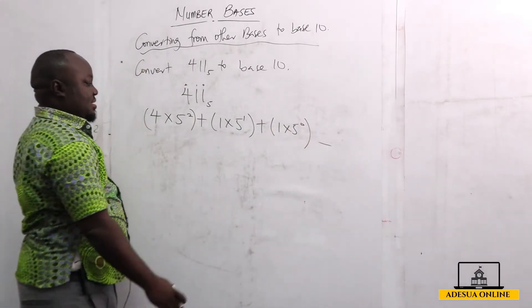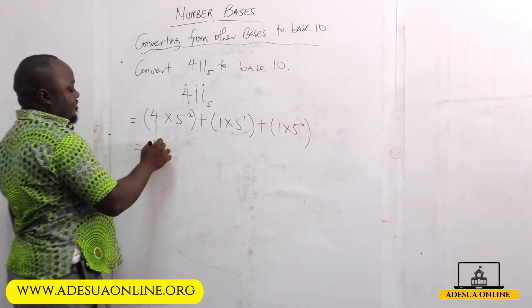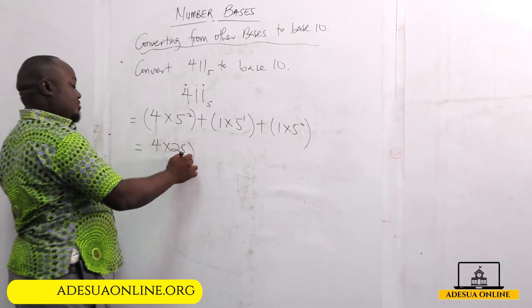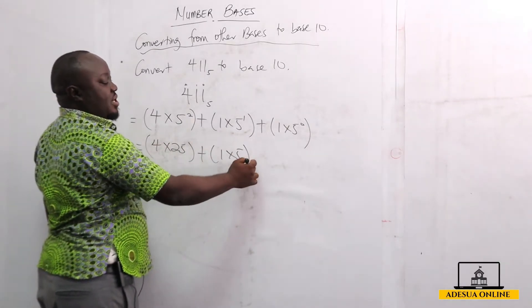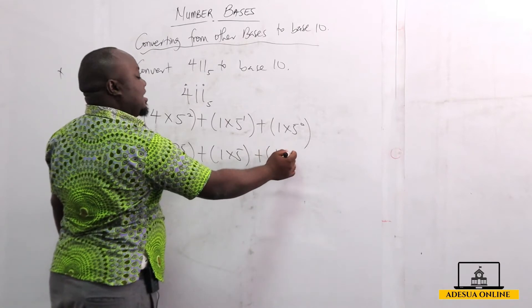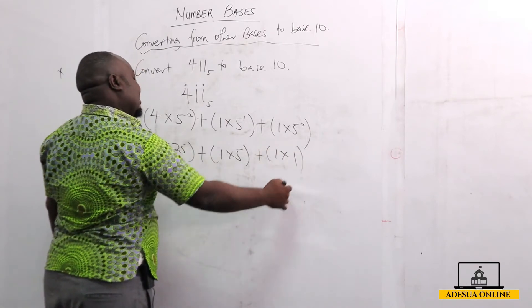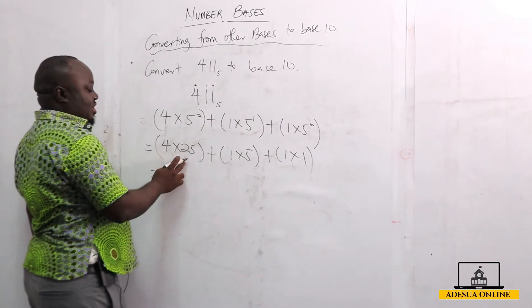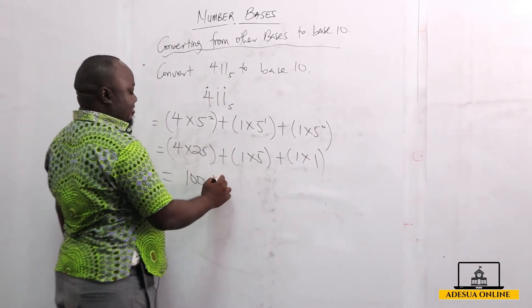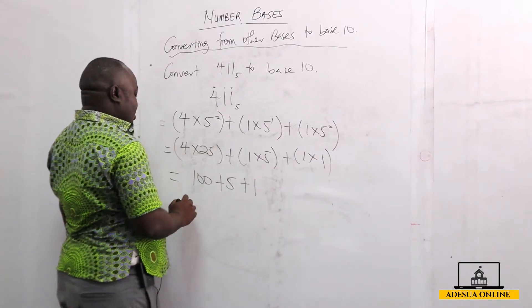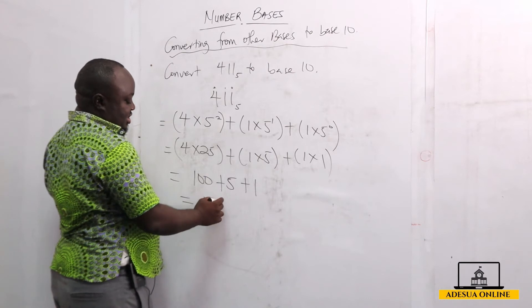So in this case, this is going to give me 4 times 25, plus 1 times 5, and then plus 1 times 1 — because any number raised to the power 0 is 1, so 5 raised to the power 0 is 1. This gives me 100 plus 5 plus 1, so the answer is 106.